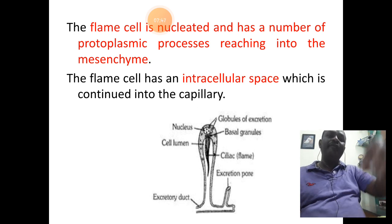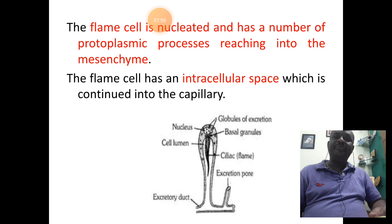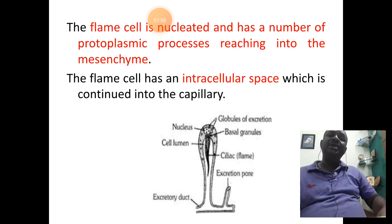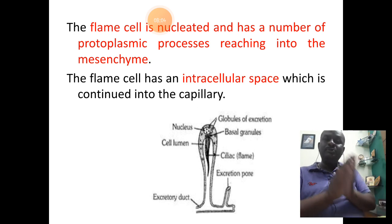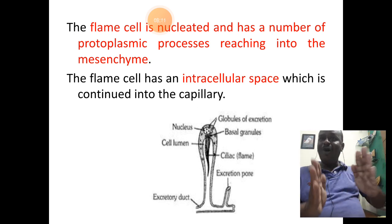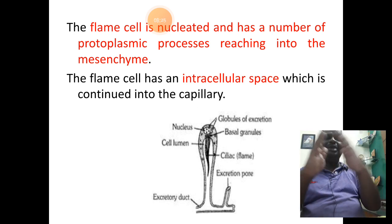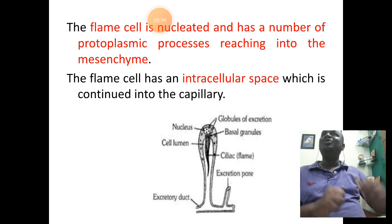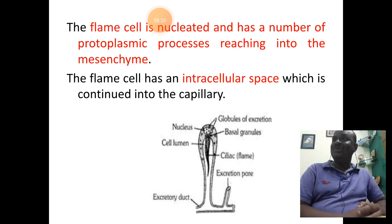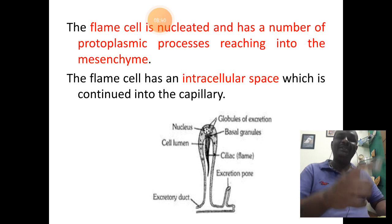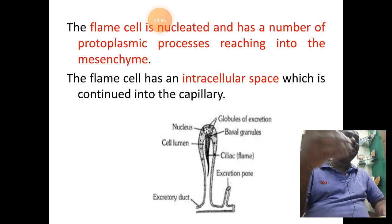That intracellular space is provided with a group of large flagella or cilia. An elongated tuft of cilia within this cavity starts moving together in a coincident manner, resembling the flickering of a flame — like a candle flame when air is blown on it. Because of this similarity with the flickering flame of a candle, the cell is referred to as a flame cell, the name commonly used for solenocytes.